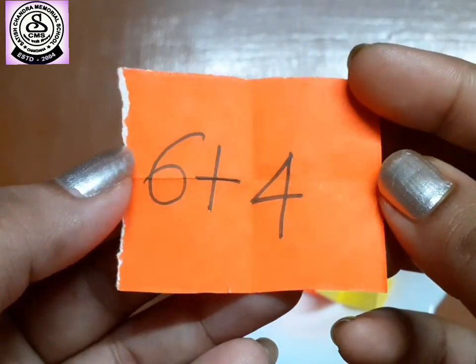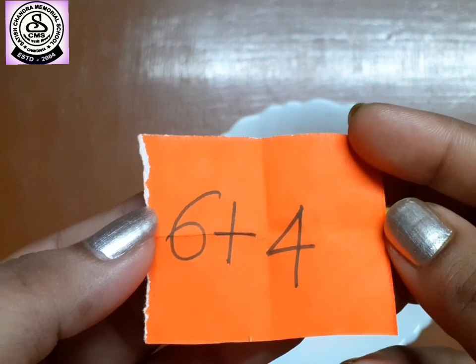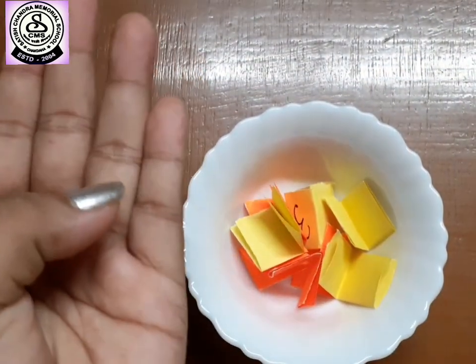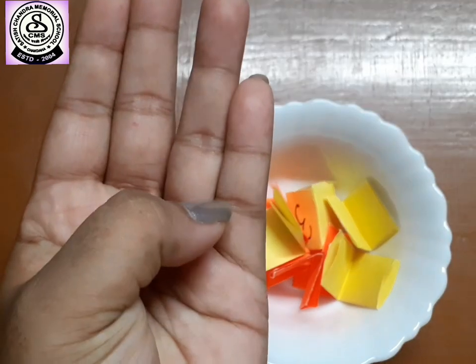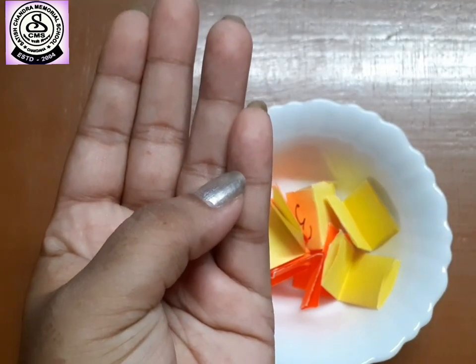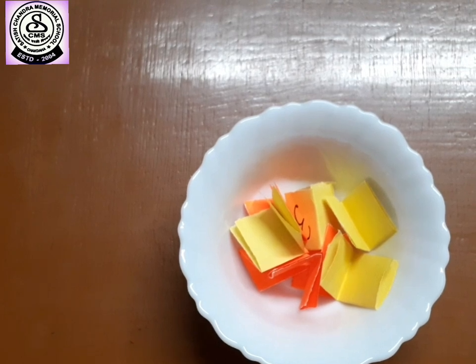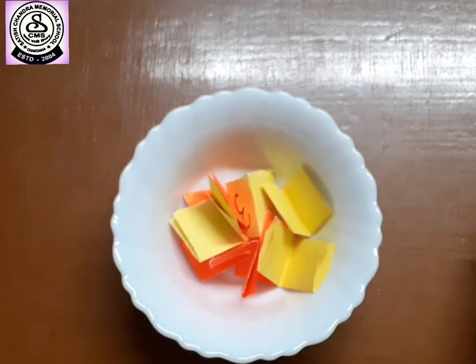Tell me how much you will get if you add six and four. After six, if you go four house, you will get seven, eight, nine, ten. So, six plus four, we get ten. This is our game.